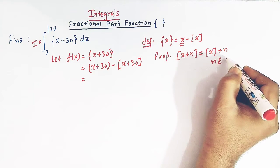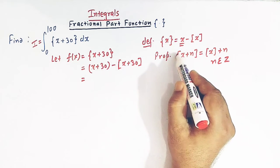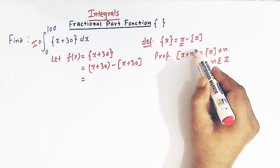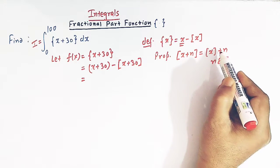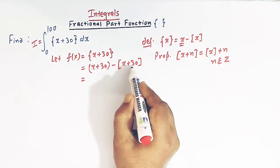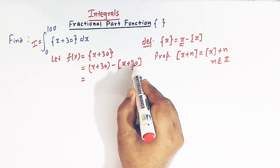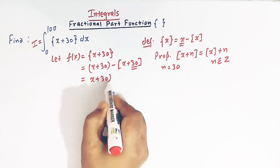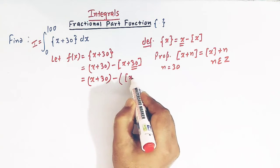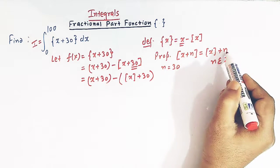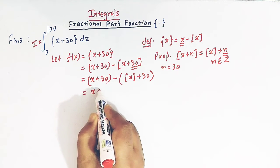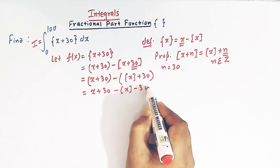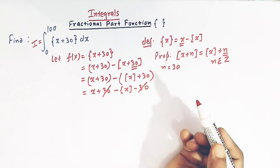So whenever we have the greatest integer of x plus some integer, we can write this term as the greatest integer of x plus that integer. Here we see that we have 30 as the integer, so n is 30. So we can now write x plus 30 and the greatest integer of x plus 30 becomes the greatest integer of x plus 30. So now this is x plus 30 minus the greatest integer of x minus 30, and this 30 and this 30 get cancelled.